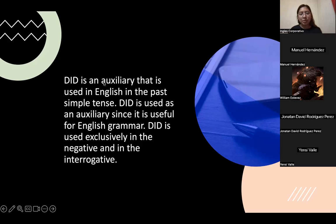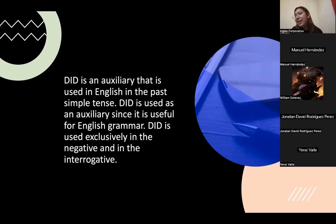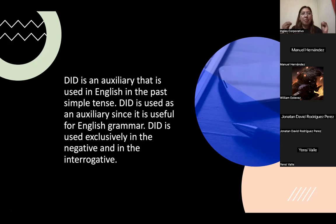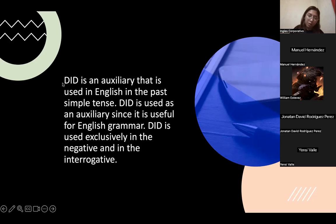If you say 'you don't play soccer last Friday,' it sounds incorrect even in Spanish — like saying 'tú no juegas fútbol el viernes pasado.' That's mixing tenses. 'Don't' is for present, 'did' is for past. Remember: the past of 'do' is 'did.' So we use 'did' as the auxiliary for the past. Is that clear? Yes, it's clear. Thank you, teacher.